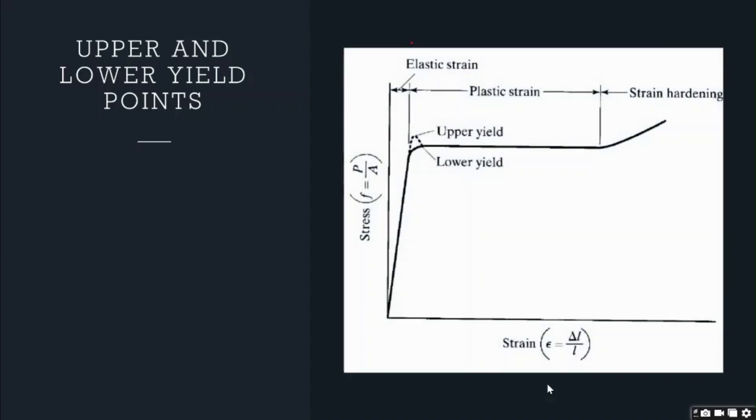Let us now discuss the upper and lower yield points. You might have seen these words in the previous slides but must be wondering what that is. The stress-strain relationship curve obtained previously can be changed based on the speed of loading, temperature, and steel type. Let's understand the speed of loading in this slide.